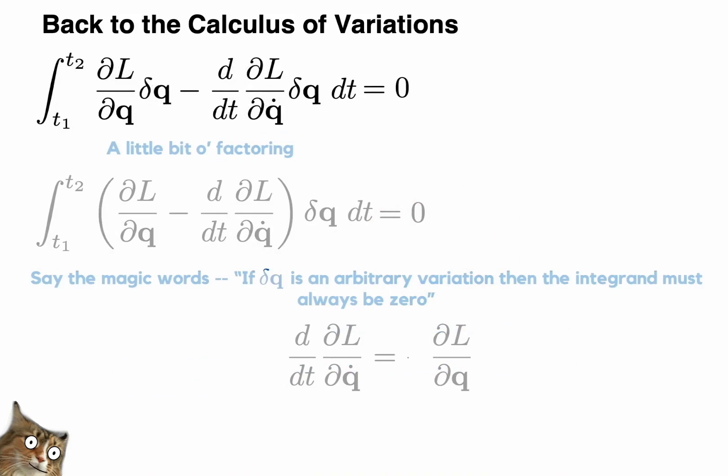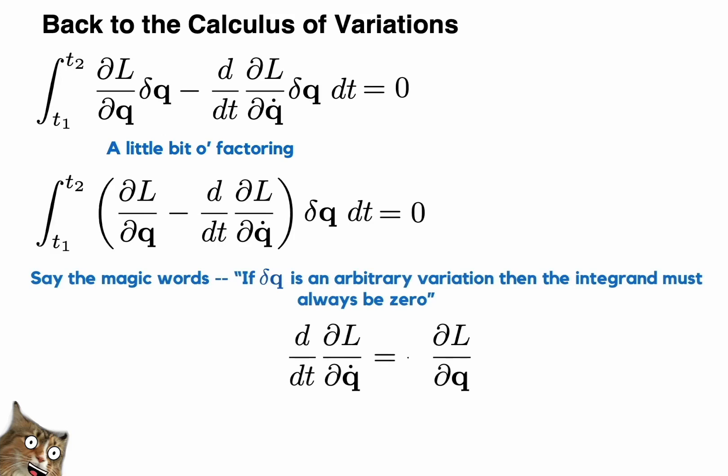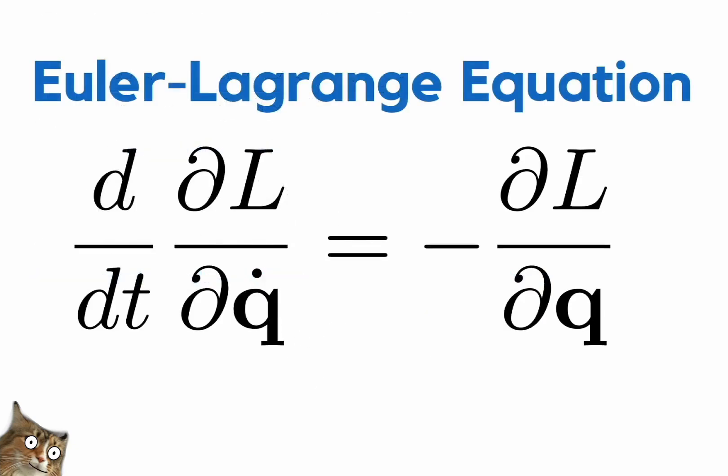And now we are in the home stretch. Factoring out our delta q gets us almost to the end. The final step is to leverage the fact that our perturbation is arbitrary. This means that for this integral to be zero, the integrand itself must be zero at every point. Okay, so we say these magic words, and now it's okay to remove the integrand from the integral, setting it equal to zero. And this yields a differential equation, a very famous differential equation known as the Euler-Lagrange equation. So what this means is that if we can find a function q of t that satisfies this Euler-Lagrange equation, then we know it is a physically valid trajectory. And we're going to build the rest of the course off of this approach.